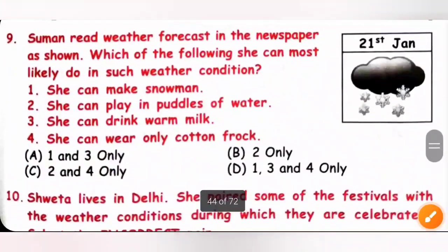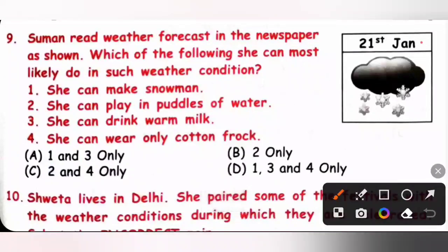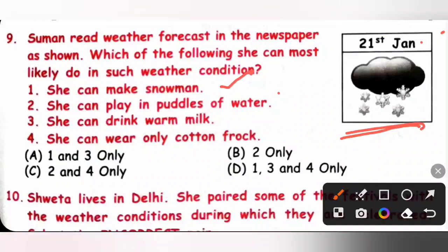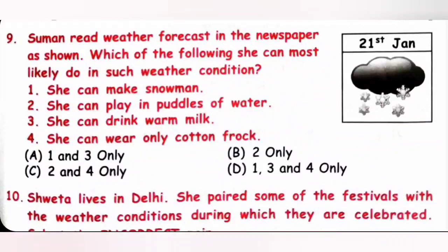Question 9: Suman read a weather forecast showing snow in January. January is a winter month. She can make a snowman — yes; play in puddles — no; drink warm milk — yes; wear only a cotton frock — no, it is winter not summer. So options 1 and 3 only are correct. Option A is the correct answer.